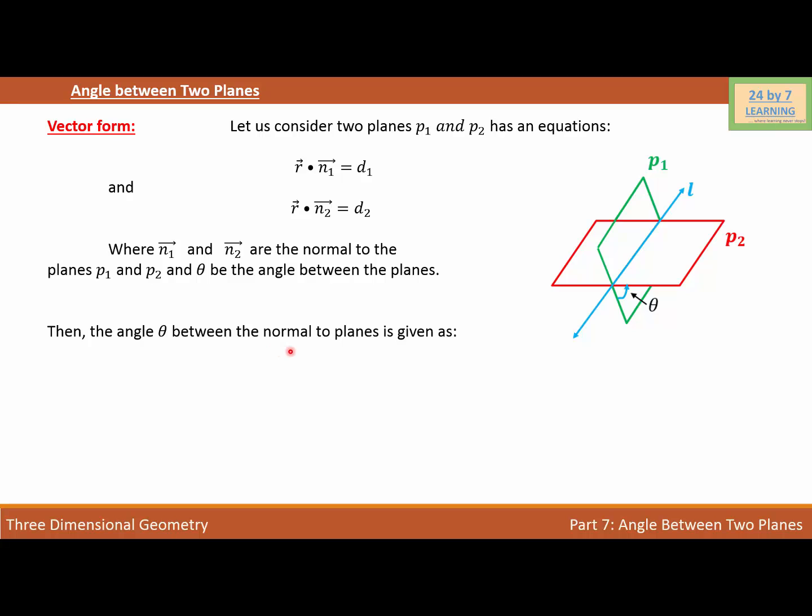Then, the angle theta between the normals of the plane is given as cosine theta is equal to absolute value vector N1 dot N2 over magnitude of vector N1 and magnitude of vector N2. And this cosine theta is angle between this plane P1 and plane P2, which is basically angle theta.